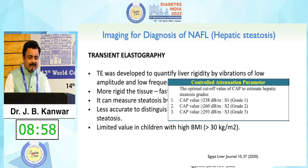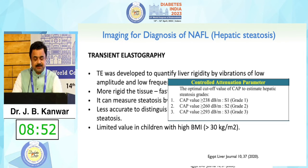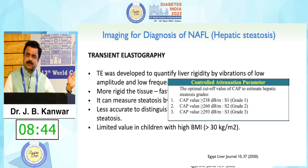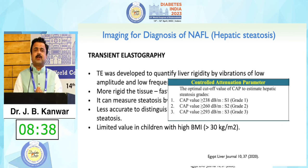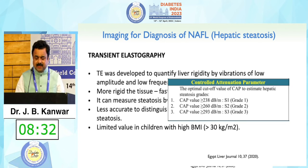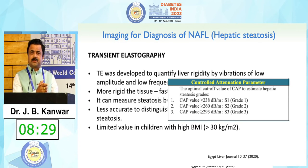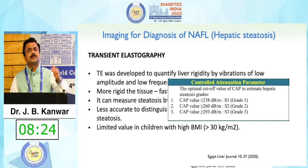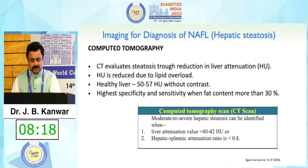Transient elastography is developed to quantify liver stiffness by vibration of low amplitude and low frequency — the more rigid the tissue, the faster the shear wave progresses. This elastography can also detect steatosis using software called the Controlled Attenuation Parameter (CAP), with different cutoffs to detect different grades of steatosis.